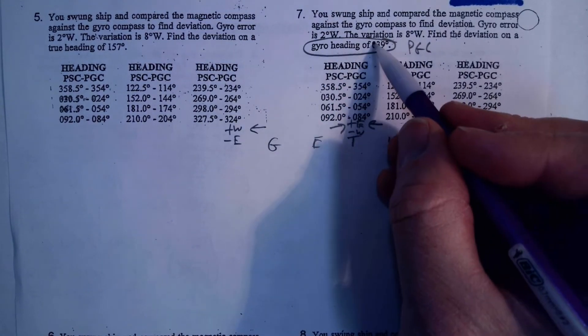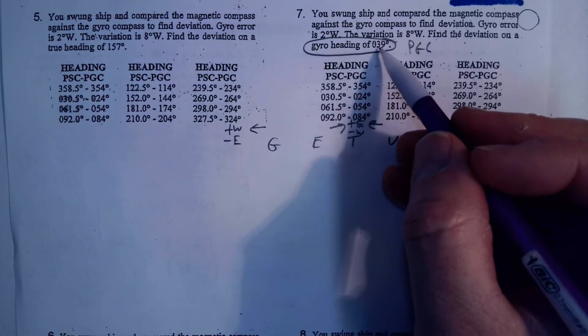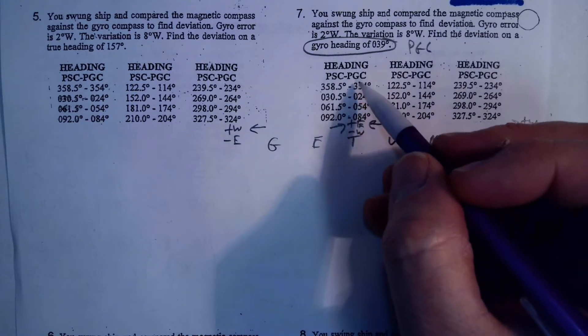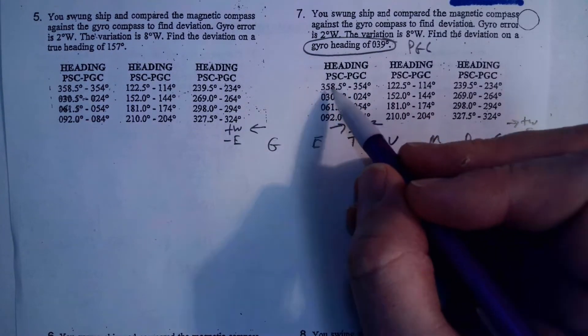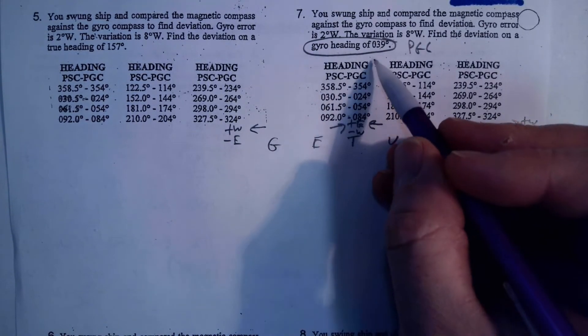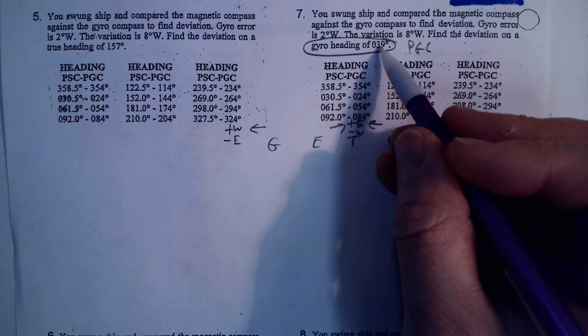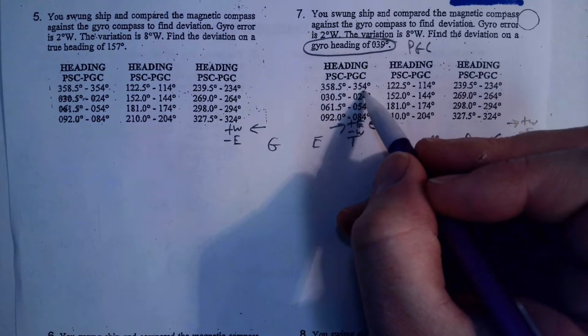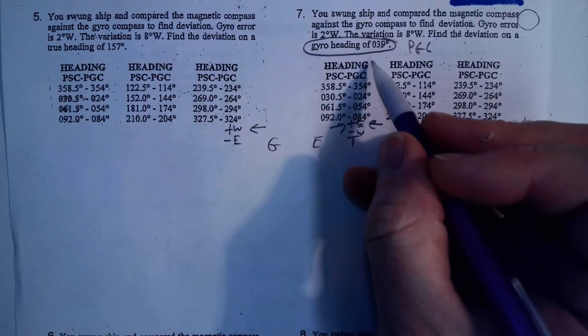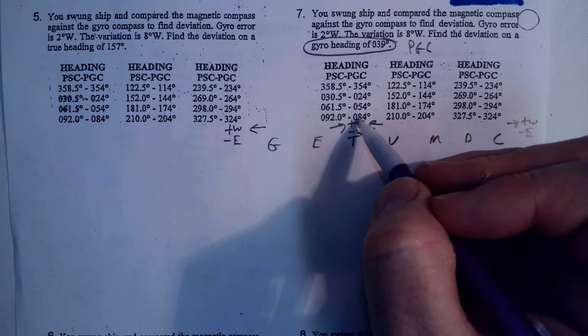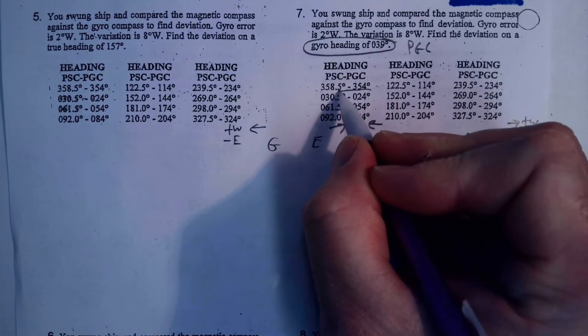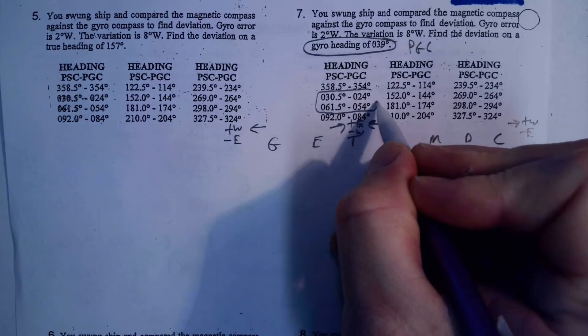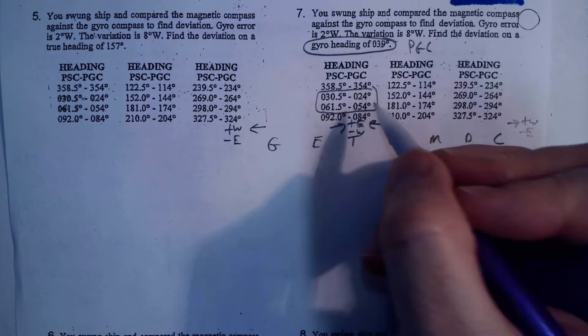I'm given a gyro heading of 039. So, in order to find my brackets, what I got to do here, this is a pair, this is a pair, and I'm going to find a bracket that surrounds the 039. So, gyro heading is PGC. Now I got to start sliding down here until I find where 039 is going to be bracketed by. It looks to me like it's going to get bracketed by right here. 039 is between 24 and 54.